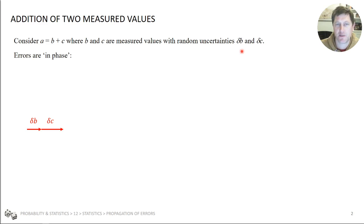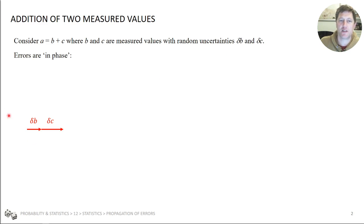Let's visualise what we're talking about before we get into the detail. Imagine that the errors in B and C are in phase — that means they contribute in the same way towards the total error. This would be the worst case scenario, so the total error would be delta B plus delta C.